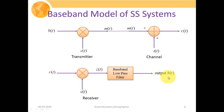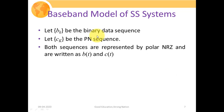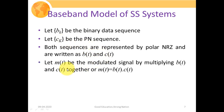Let us understand mathematically how the output B(t) is generated. Let B_k be the binary data sequence and C_k be the PN sequence. We first convert B_k and C_k to polar NRZ format, giving B(t) and C(t) respectively. The modulated signal is M(t) = B(t) × C(t), as seen in the transmitter block — multiplying the bit sequence with the chipping sequence produces the spread message signal.